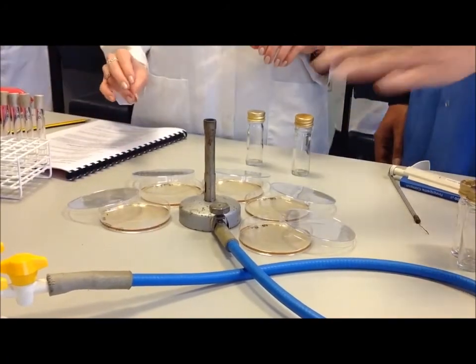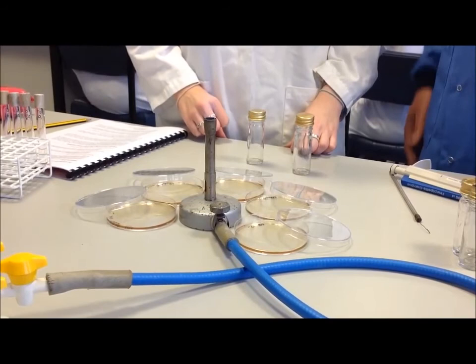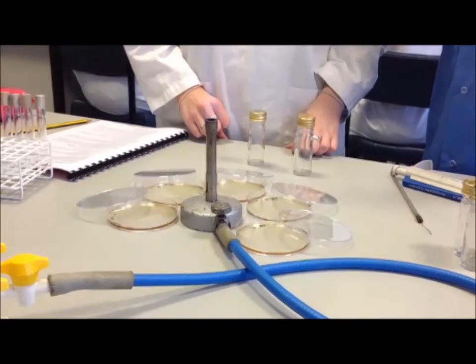And then as long as the agar plates are kept close to the Bunsen burner, they can be left with their lids ajar to dry, and that prevents excessive condensation accumulating on the lid of the agar plates.